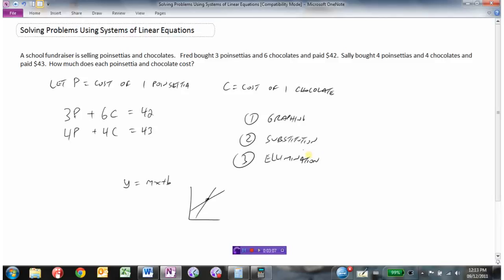Substitution we could do, but we'd have to isolate P or C and substitute it. The thing that's nice with elimination is we just need to get the coefficients the same of one of the variables and then add or subtract. So I'm going to go with elimination and multiply the top one by 4 and the bottom by 3.